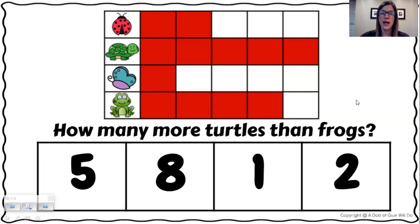One frog matches one turtle. Two frogs, that matches two turtles. Three frogs matches three turtles. Four frogs matches four turtles. But there's one extra turtle. There's one extra one.